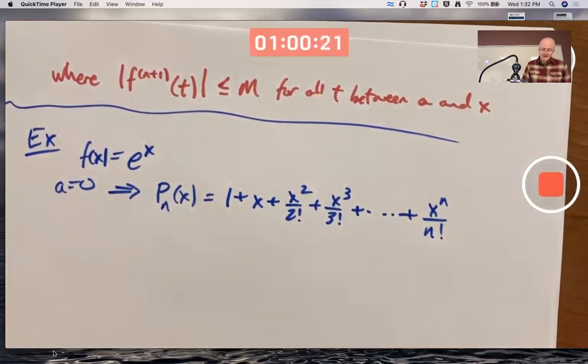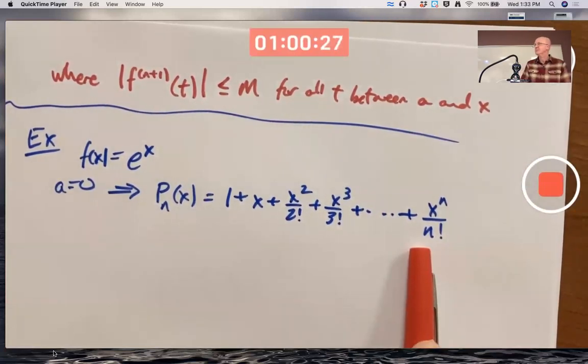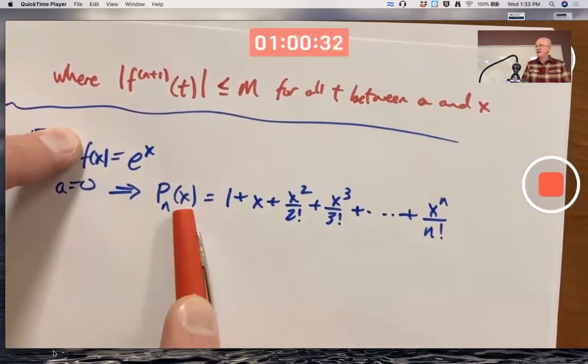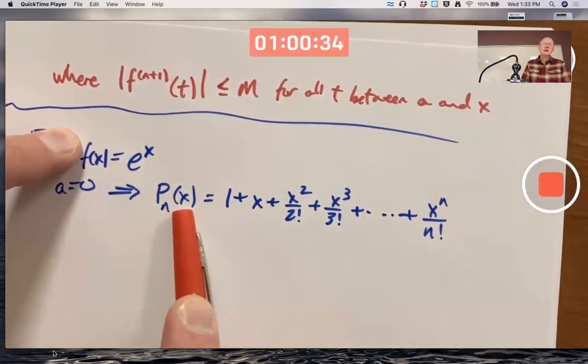What I'd like to do is I'd like to use this theorem to figure out how big n should be to make the distance between the function value f of x and p_n of x be, say, smaller than 0.001 for a certain value of x. How about we pick x equal to 1?